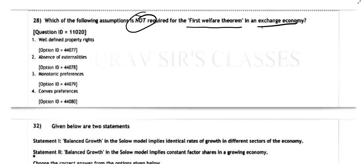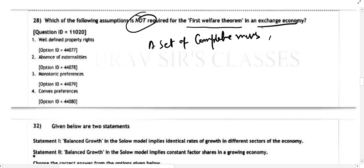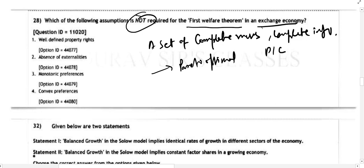The First Welfare Theorem states that a set of complete markets with complete information and a perfectly competitive structure will give us a Pareto optimal situation — meaning no one can be made better off without making someone else worse off. This is the fundamental theorem of welfare economics.